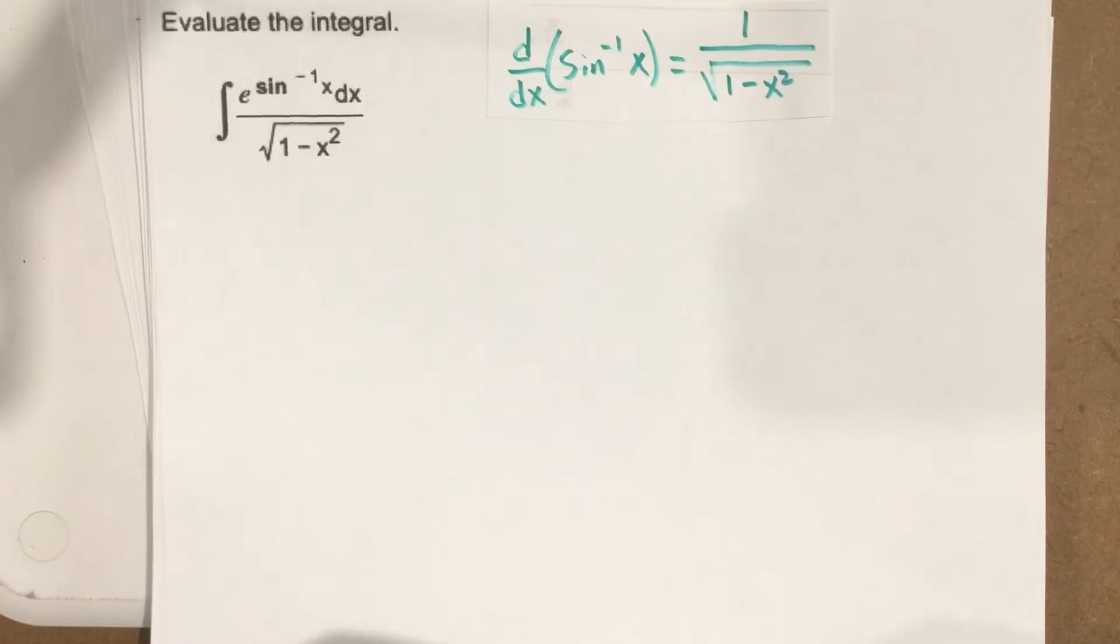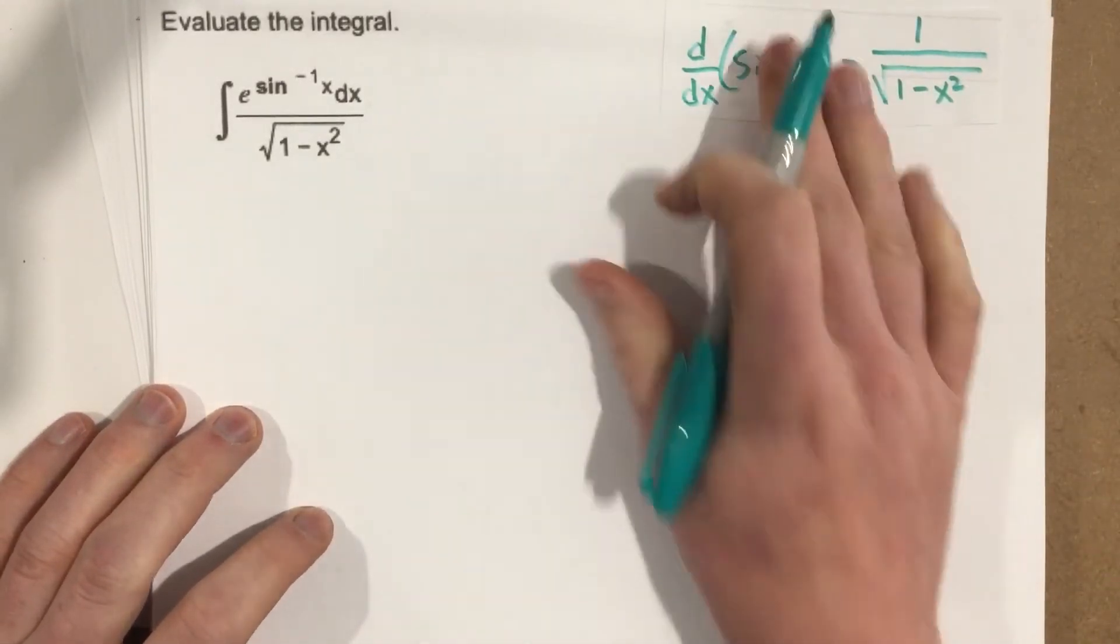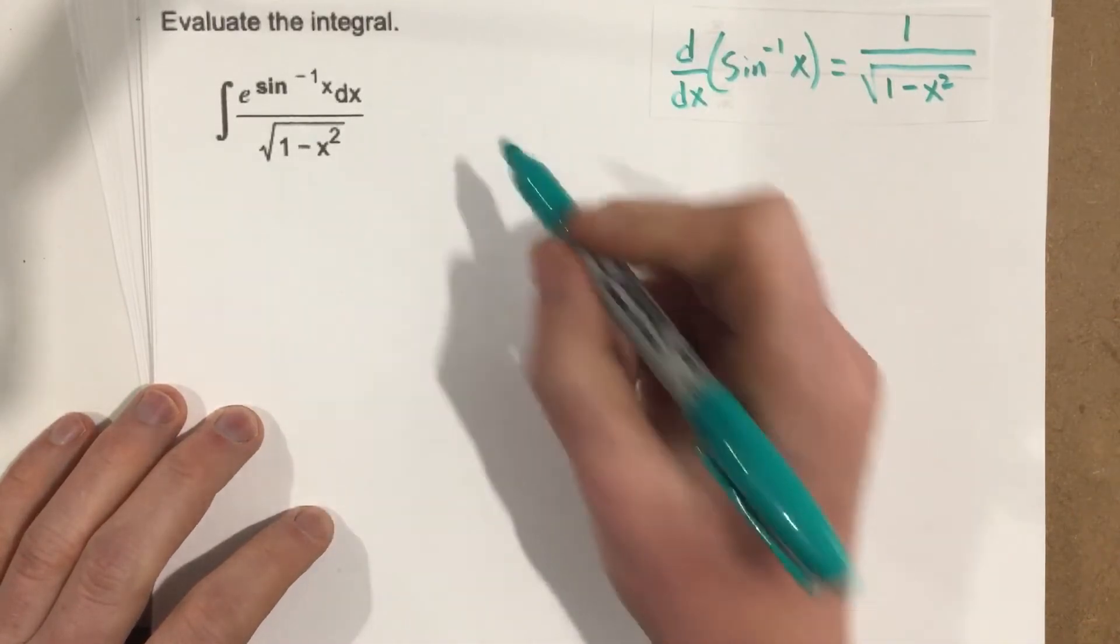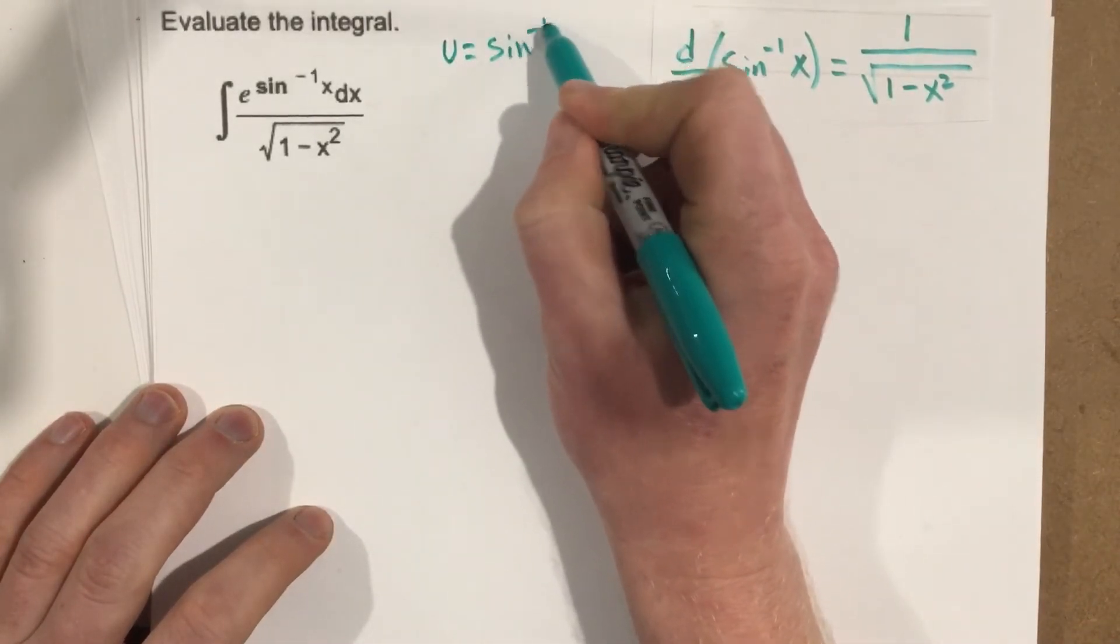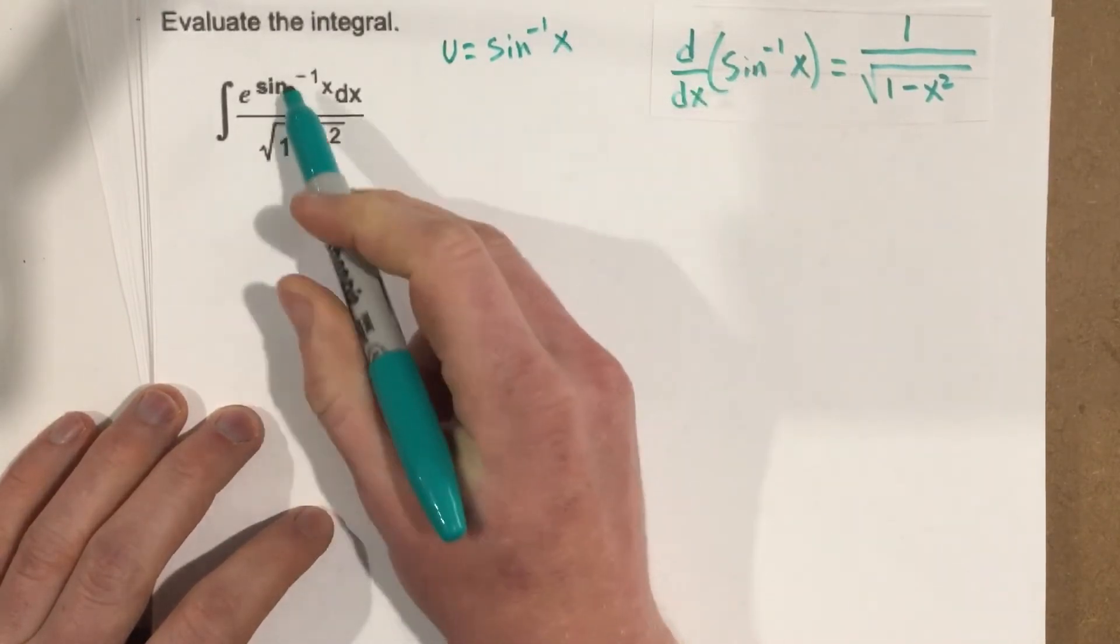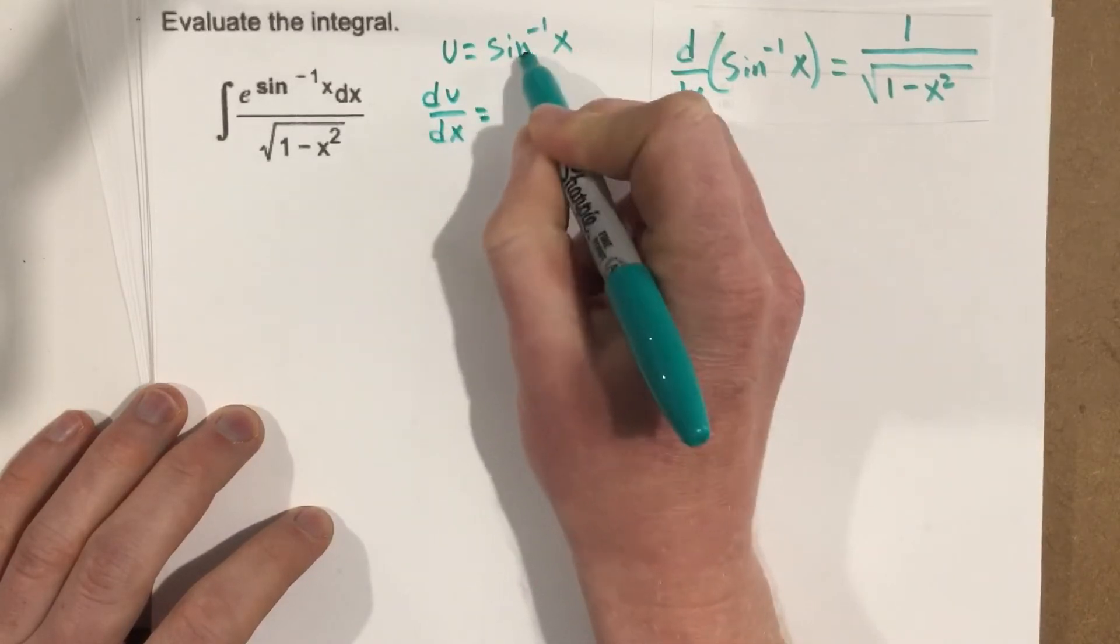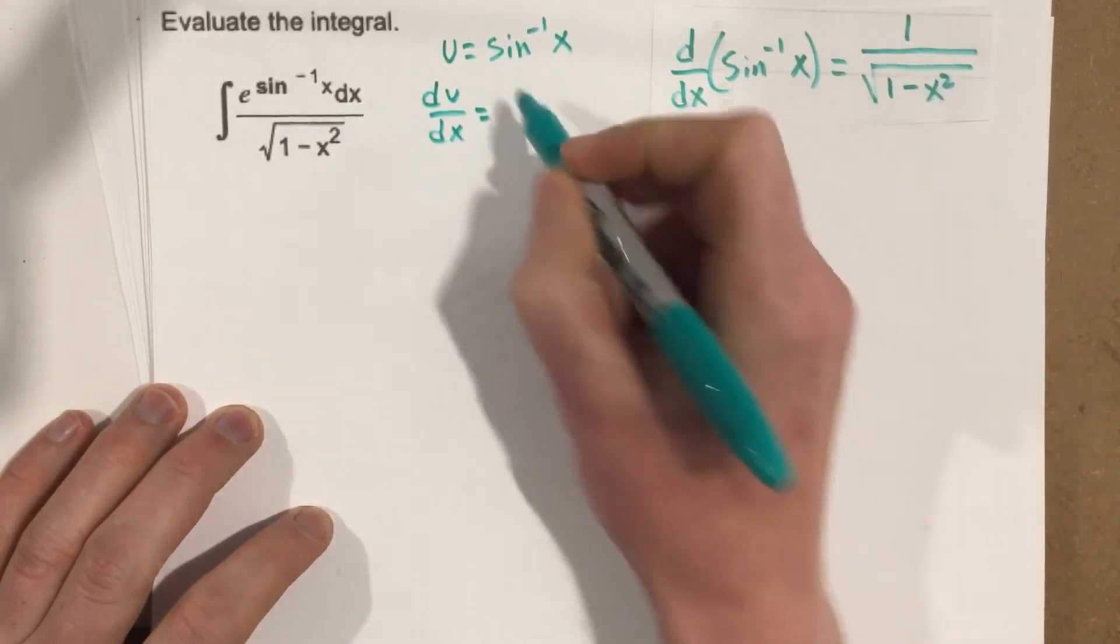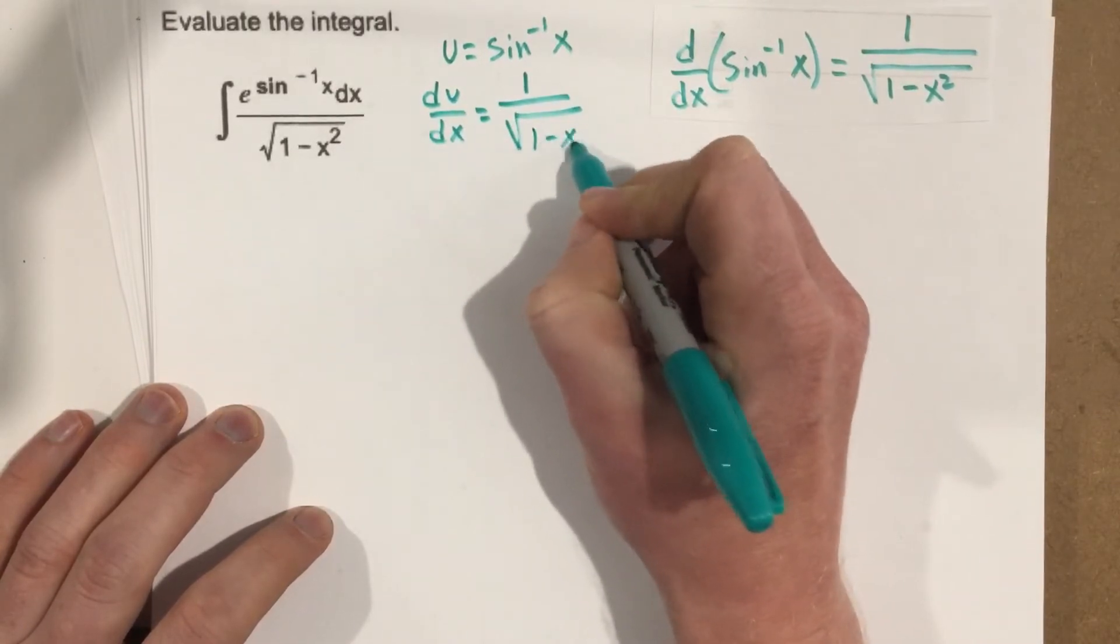We want to make our u equal to sine inverse of x. And then du over dx, so the derivative of sine inverse, we're going to use that rule, we know is 1 over root 1 minus x squared.